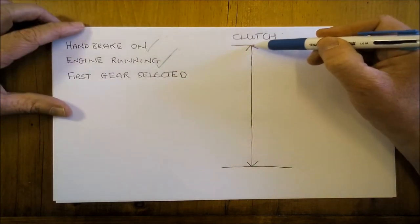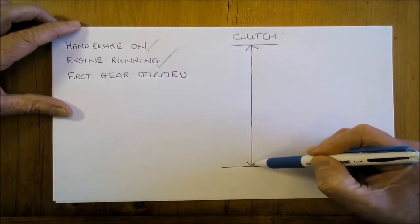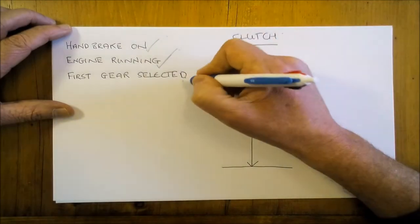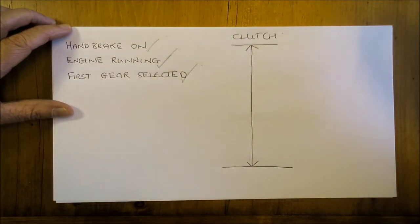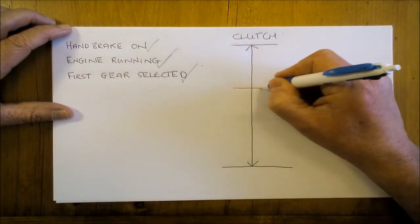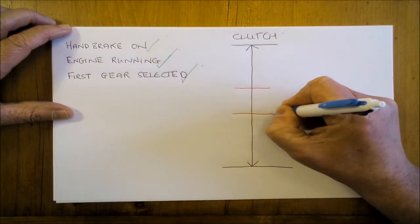Now if you push the clutch all the way down and then select first gear, what that does is it slots in the range of the biting point.